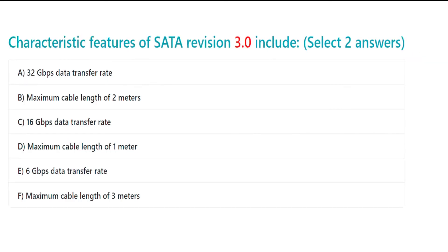Characteristic features of SATA Revision 3.0 include, select two answers. A. 32 Gbps data transfer rate. B. Maximum cable length of 2 meters. C. 16 Gbps data transfer rate. D. Maximum cable length of 1 meter. E. 6 Gbps data transfer rate. F. Maximum cable length of 3 meters.